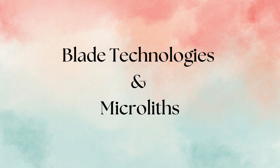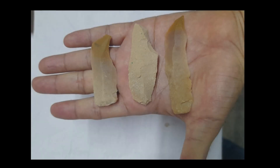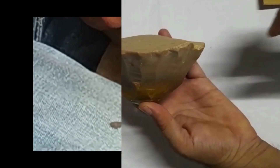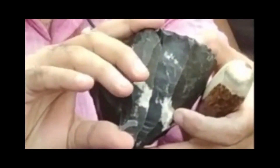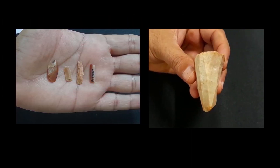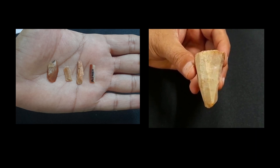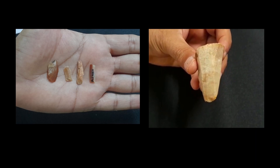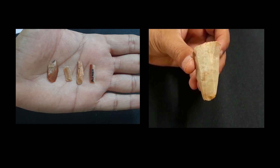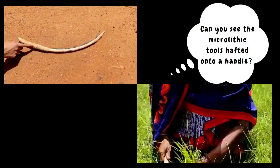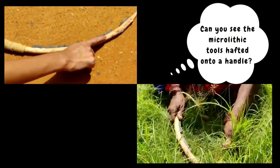Blade technologies: these long, parallel-sided blades were struck off cores in many ways. Here, a punch is being used to knock off blades. Sometimes pressure was used to strike off tiny blades, and the rocks were often heated. Tiny little tools called microliths were made in many different ways, retouched and hafted onto handles.